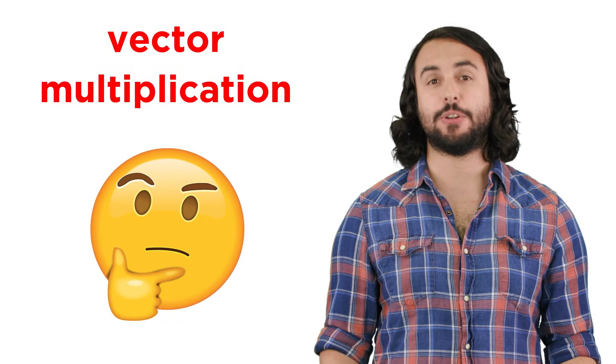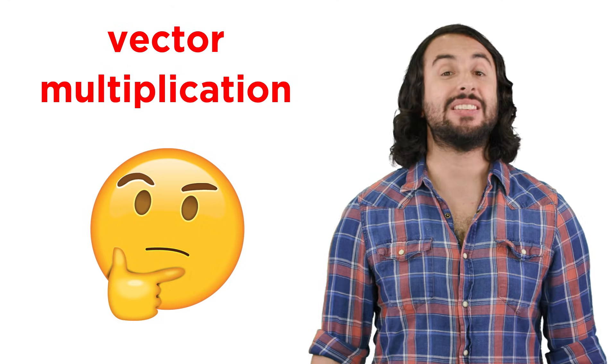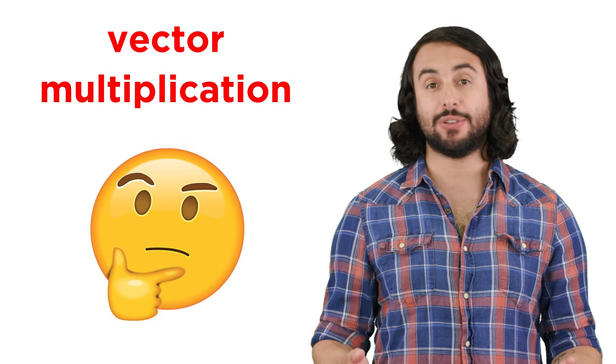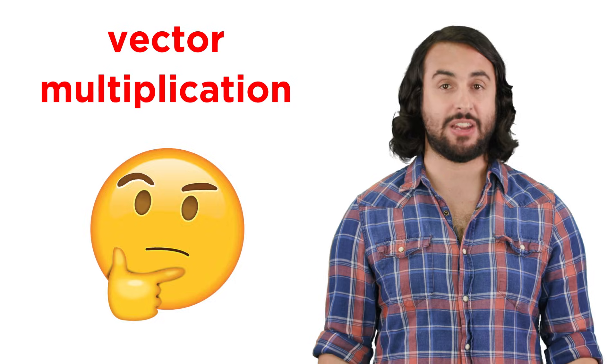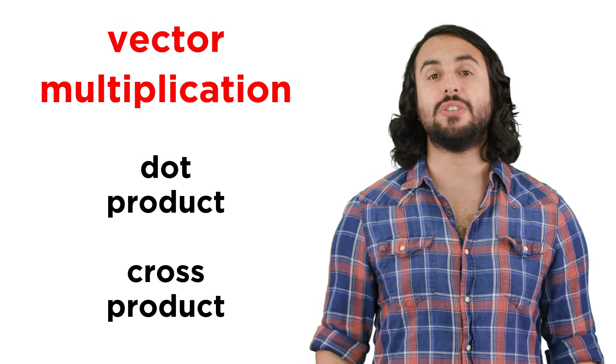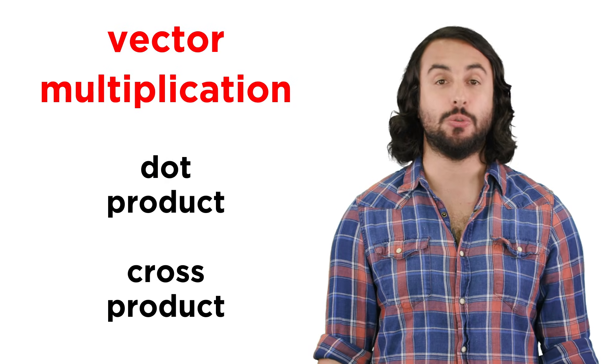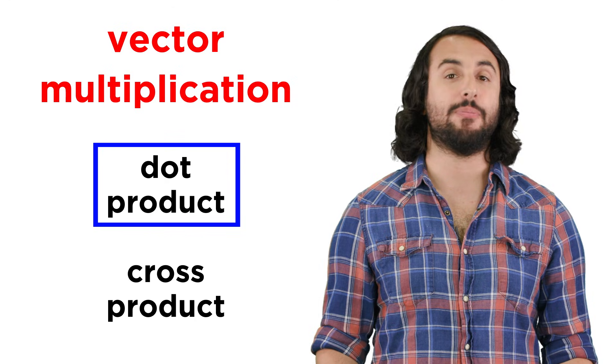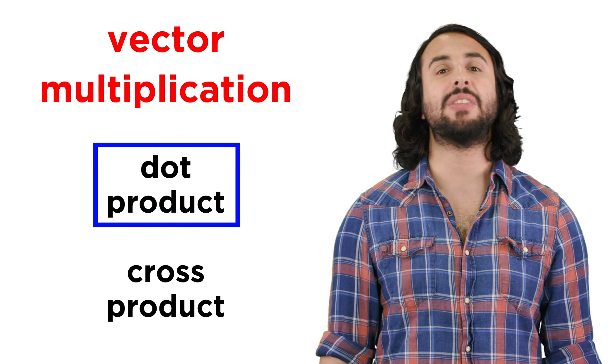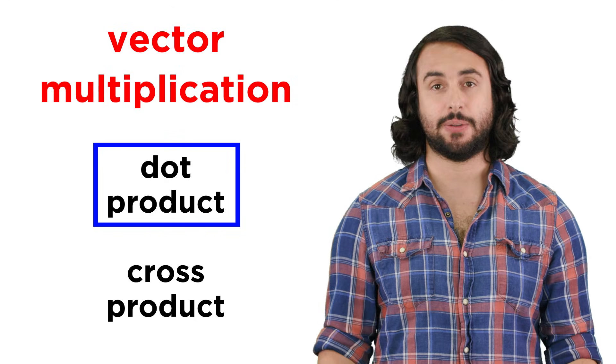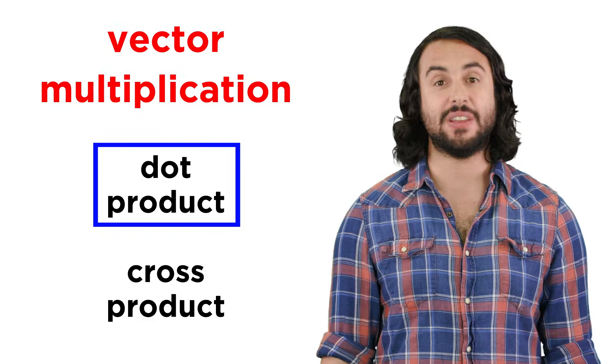But we also want to be able to multiply two vectors together, and this is not as trivial, because we have to understand what we mean by this operation. There are actually two different ways that we can multiply two vectors, and the first kind of multiplication will give us something called the dot product. Let's learn how to perform this operation.